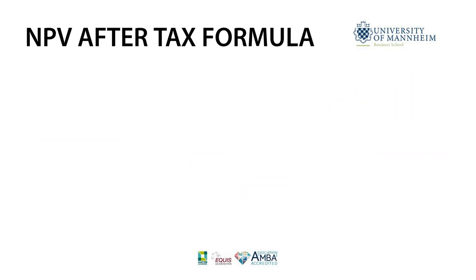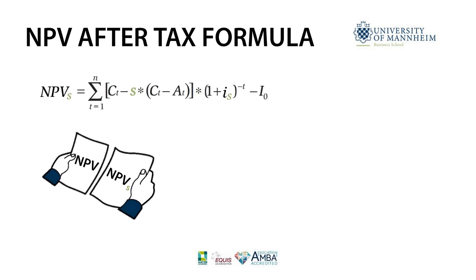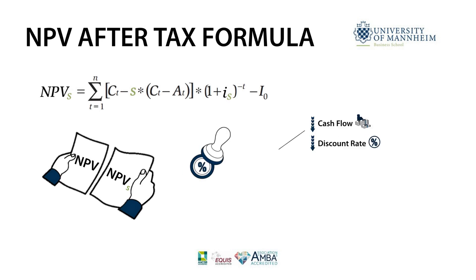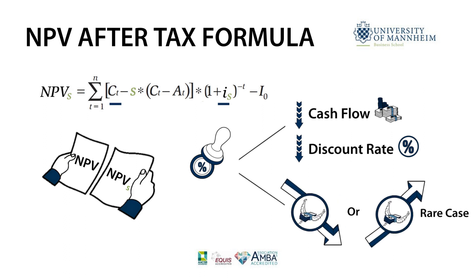The NPV after taxes is determined by the following formula. It differs from the NPV before taxes to the extent that tax payments decrease both the cash flow C as well as the discount rate I. The effect of taxes might decrease, or in rare cases even increase, the profitability of an investment.